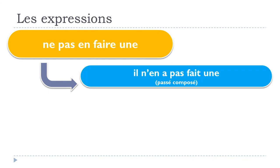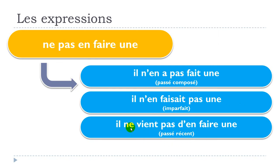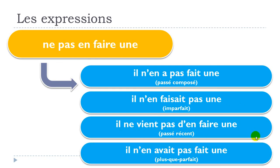Now let's see some past tenses. Passé composé: il n'en a pas fait une. Imparfait: il n'en faisait pas une. Plus-que-parfait: il n'en avait pas fait une. Passé récent: il ne vient pas d'en faire une.